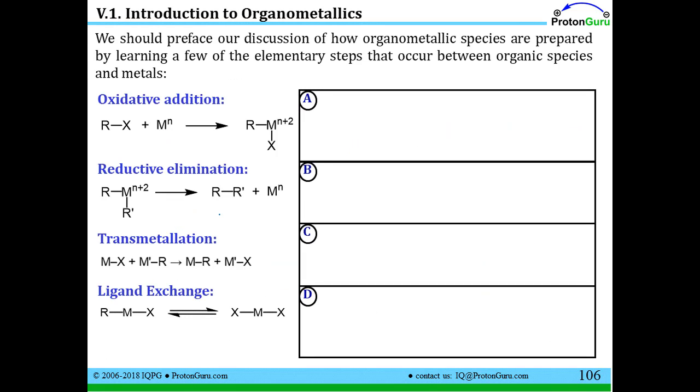In order to do this properly, we should really preface our discussion by figuring out how we could make these compounds. One way you can make these compounds is through a process called oxidative addition. We haven't seen this type of step before. But it's usually a reaction where you take something like an alkyl halide and react it with a metal. The metal may have some charge on it already, or the metal might be neutral.